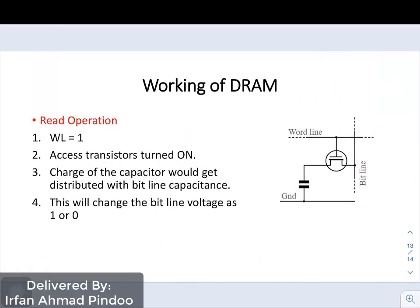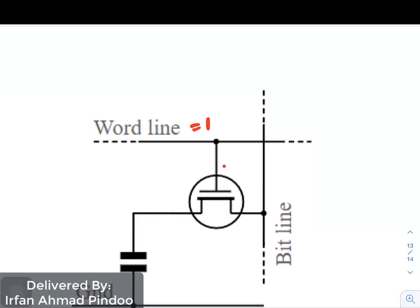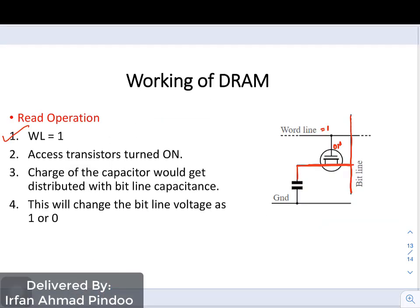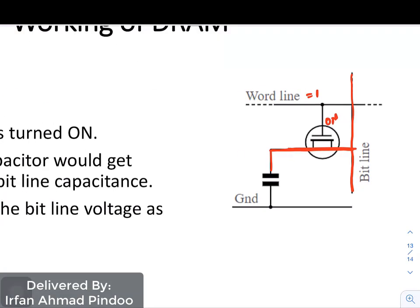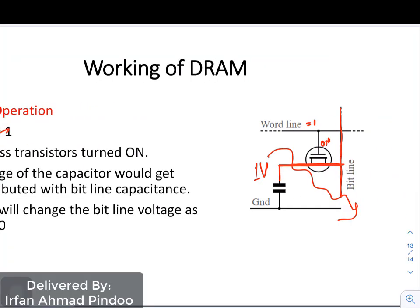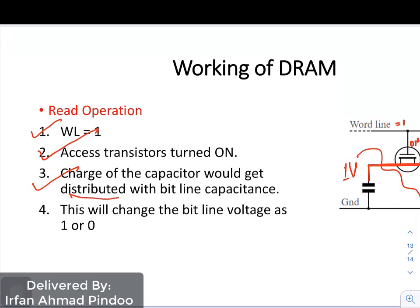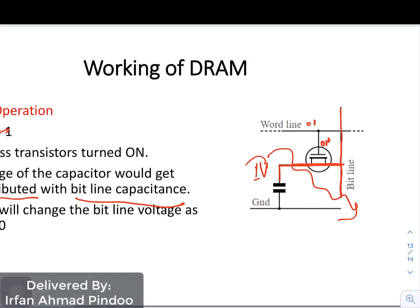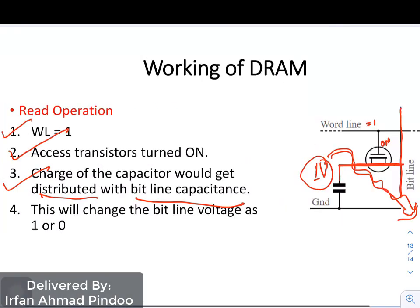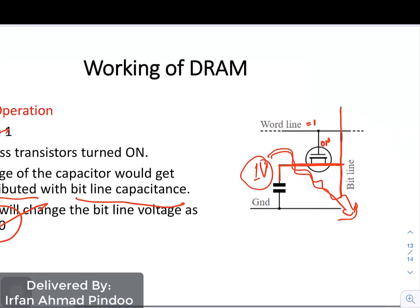Finally, the read operation of DRAM. Again, the first point is WL must be 1. Once WL is 1, the transistor is on and acts as a short, connecting the bit line to the capacitor. The charge on the capacitor now gets distributed with the bit line capacitance. If the stored value is logic 1, it gets transferred to the bit line, changing the bit line voltage to 1 or 0 accordingly.